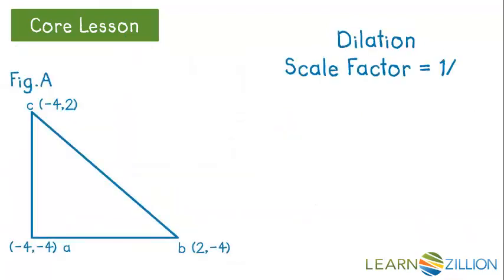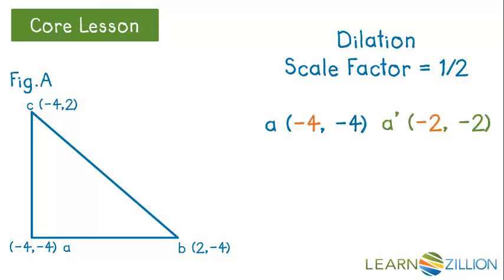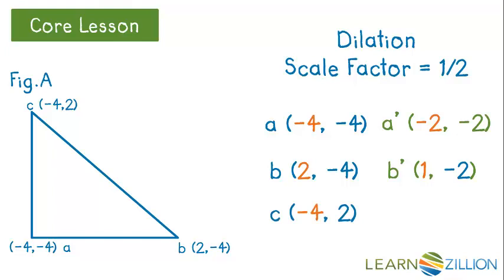Let's take a look at an image that is reduced rather than enlarged. Remember, if we reduce the size, the scale factor must be less than 1, so we'll use a scale factor of one-half. A is at (−4, −4), so A prime is (−2, −2). B is at (2, −4), so one-half of that gives B prime at (1, −2). C is at (−4, 2), so C prime is at (−2, 1).